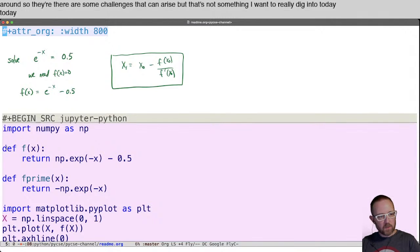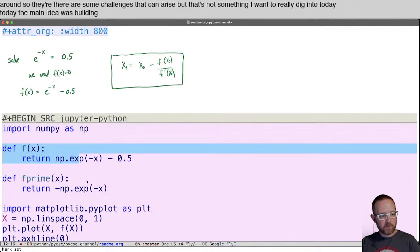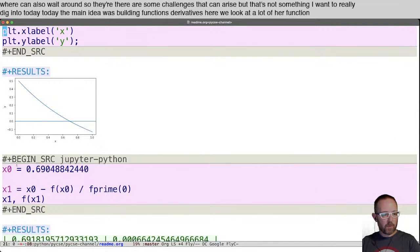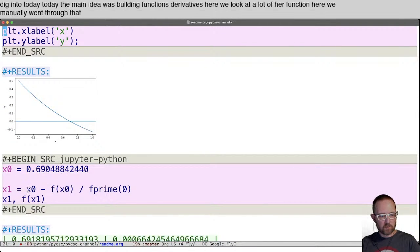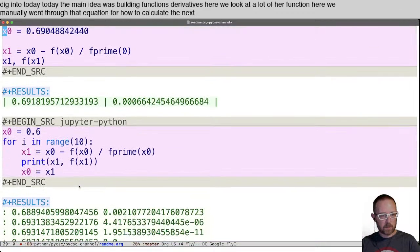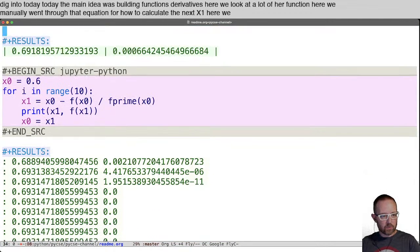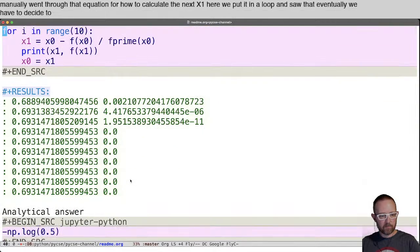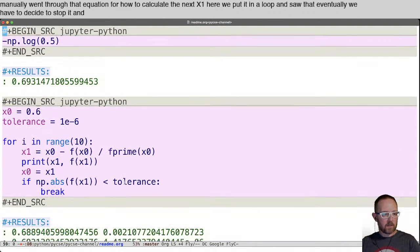Today, the main idea was building functions, derivatives. Here we look at a plot of our function. Here we manually went through that equation for how to calculate the next x1. Here we put it in a loop and saw that eventually we have to decide to stop it. And finally we put in the conditional and control statement to make that happen.